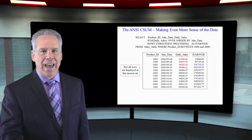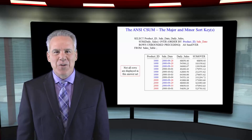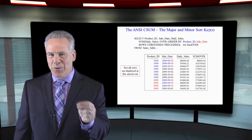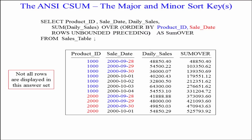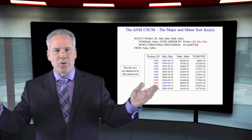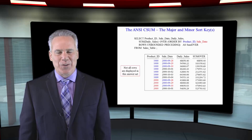We now have a multi-column sort key. We're summing daily sales OVER, ordering by product ID first — all the 1,000s come in, then the 2,000s. The minor sort is sale date, so all ties within 1,000 are then sorted by sale date within product ID 1,000. Once the sort is done, it does the cumulative sum based on how those rows were sorted.